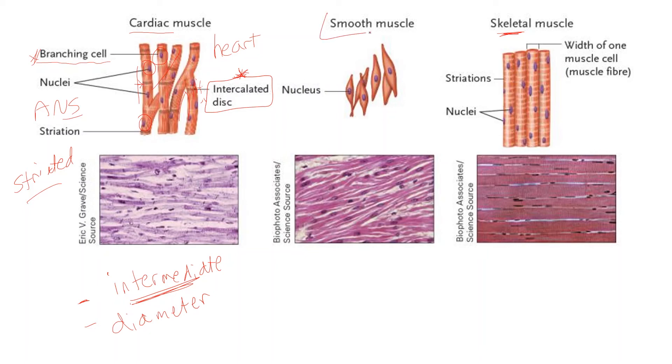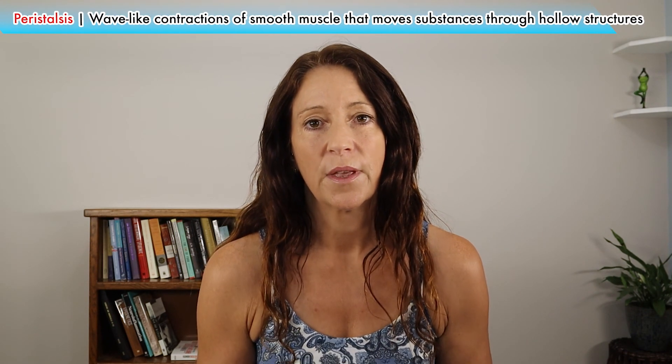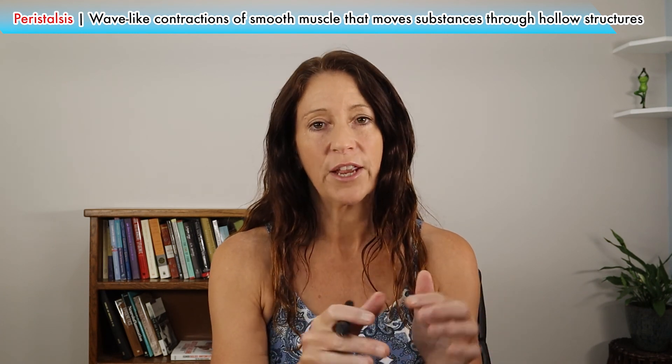Smooth muscle cells have one nucleus and are small tapered cells that will function in groups. They also have gap junctions that allow signaling molecules to cross through. Smooth muscles are involved in moving substances through the digestive tract, blood vessels, the ureters that bring urine from the kidneys to the bladder, or the fallopian tubes that carry the egg. These smooth muscles work in a motion called peristalsis, and the gap junction proteins are important for allowing signaling molecules to pass between cell membranes so the cells can work together.